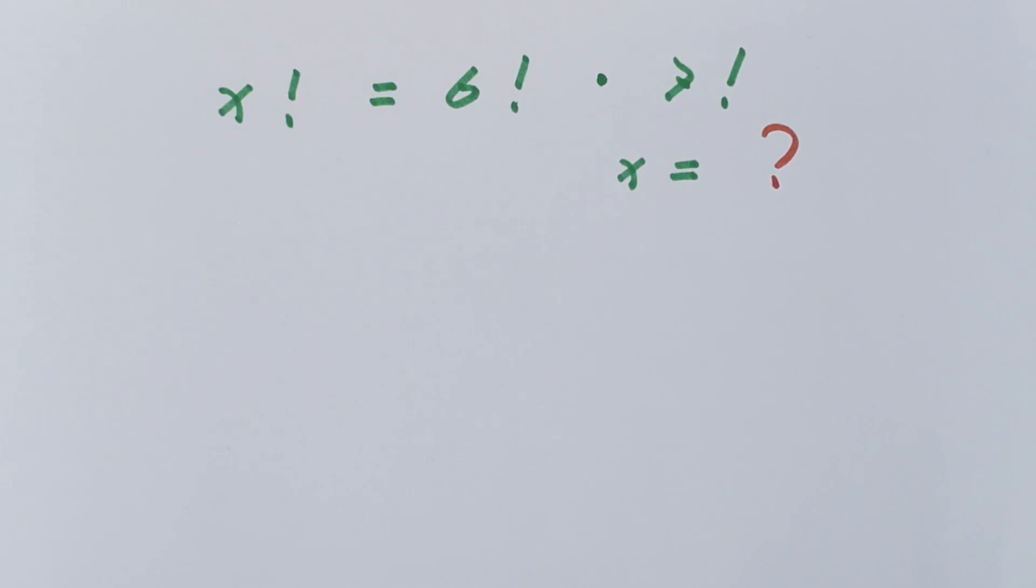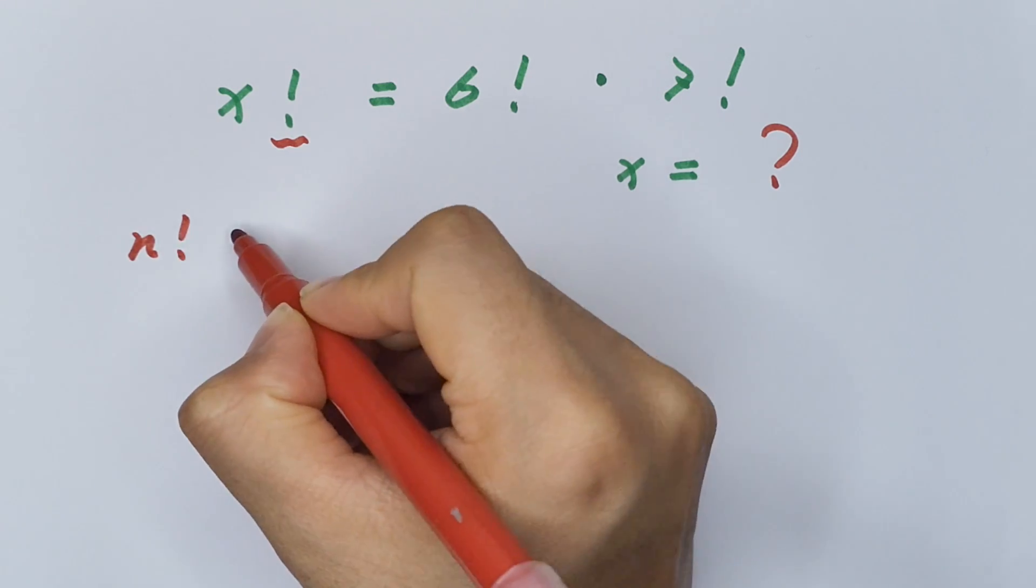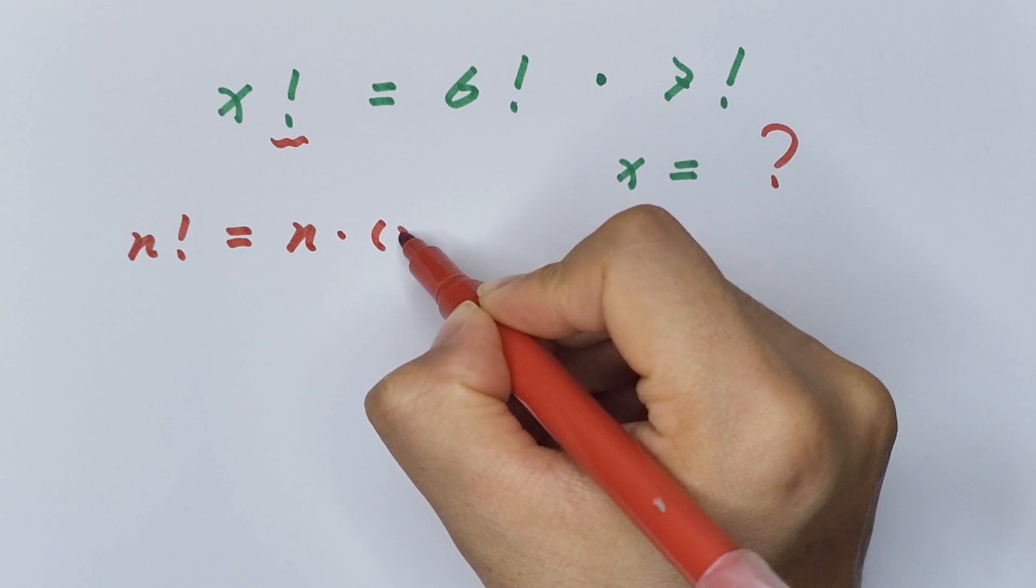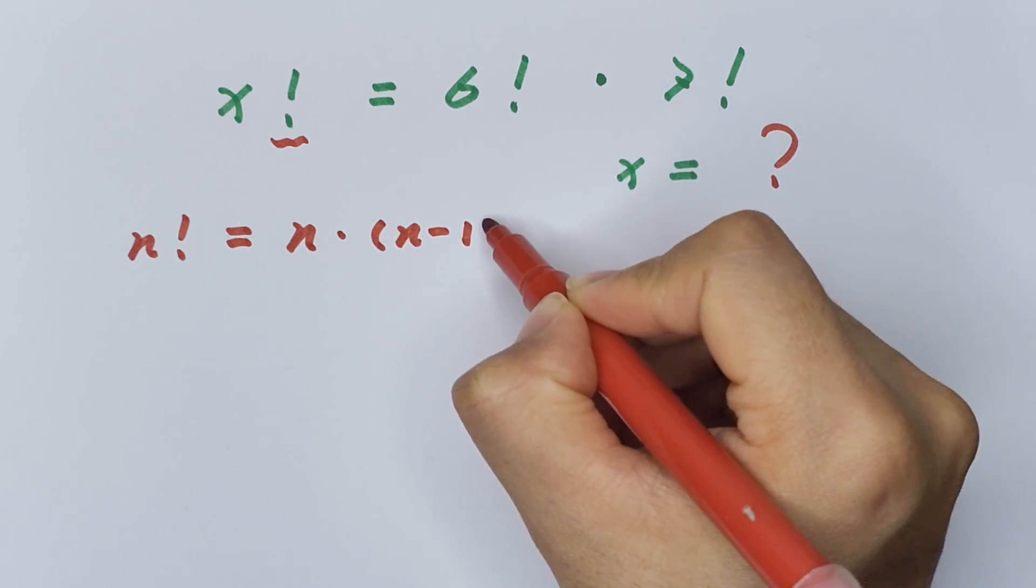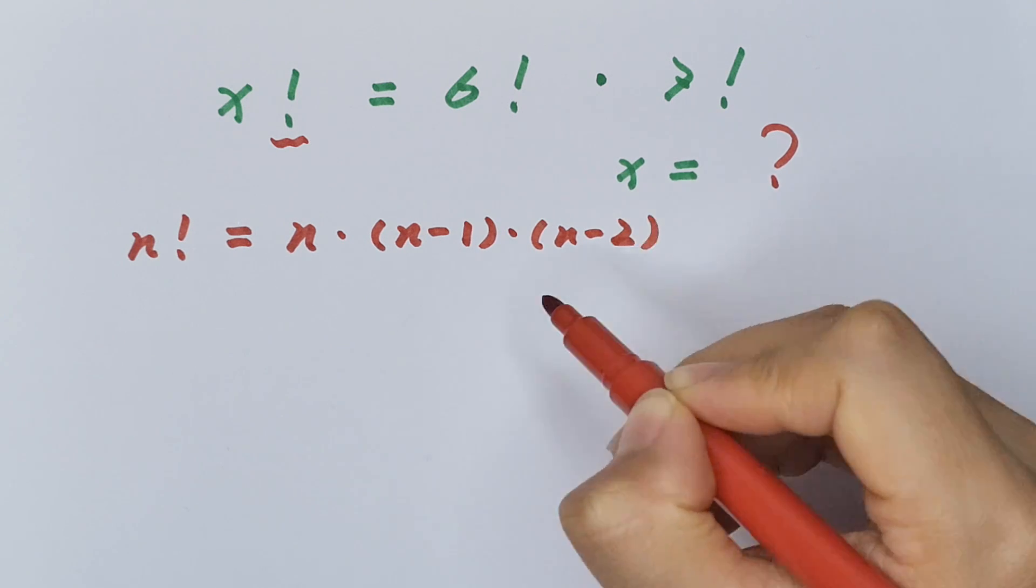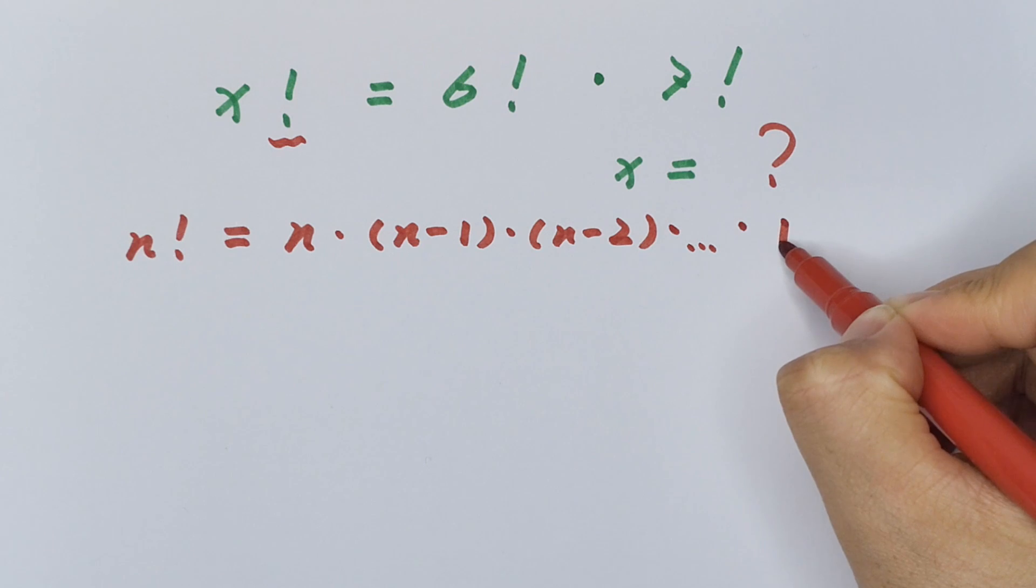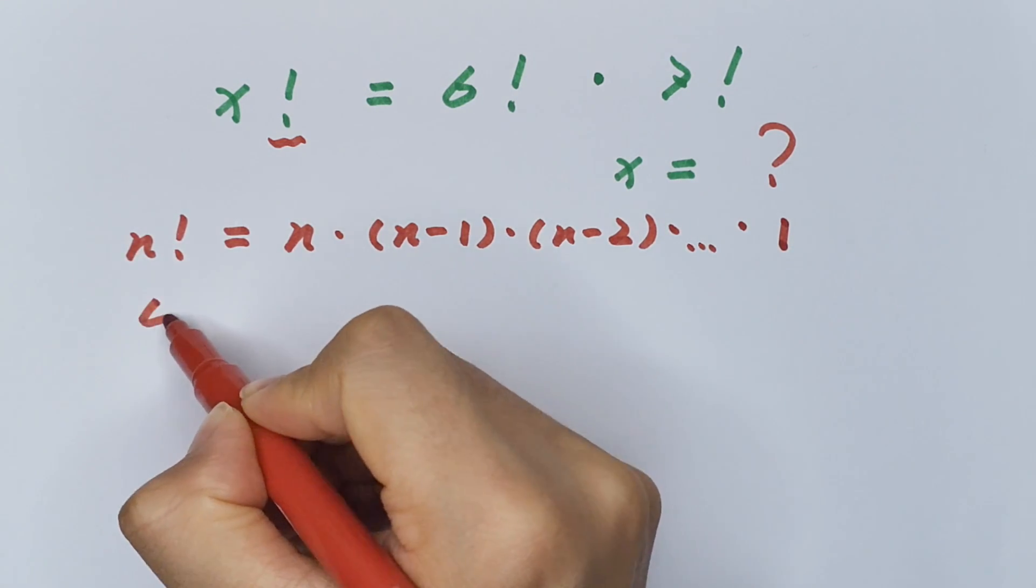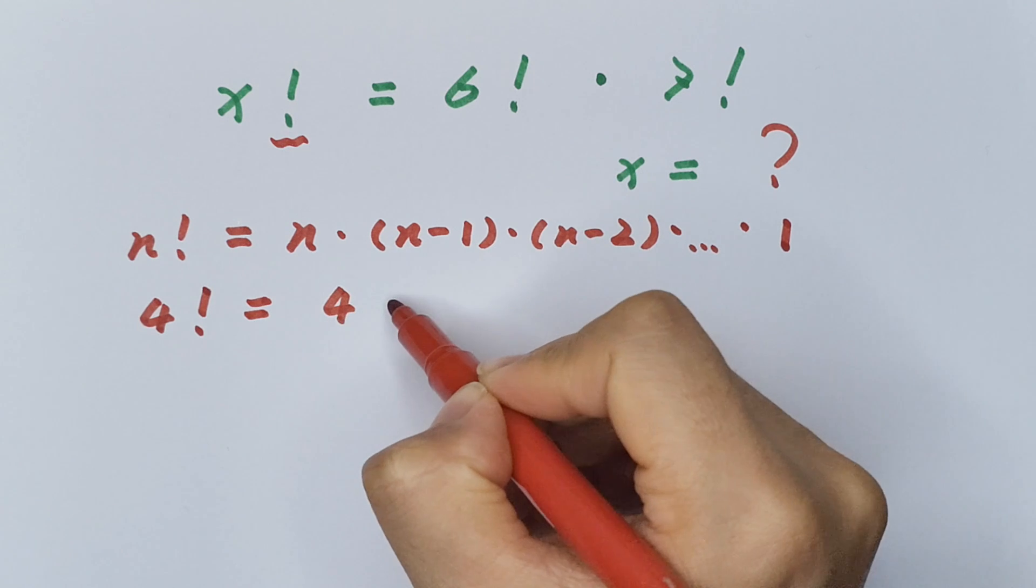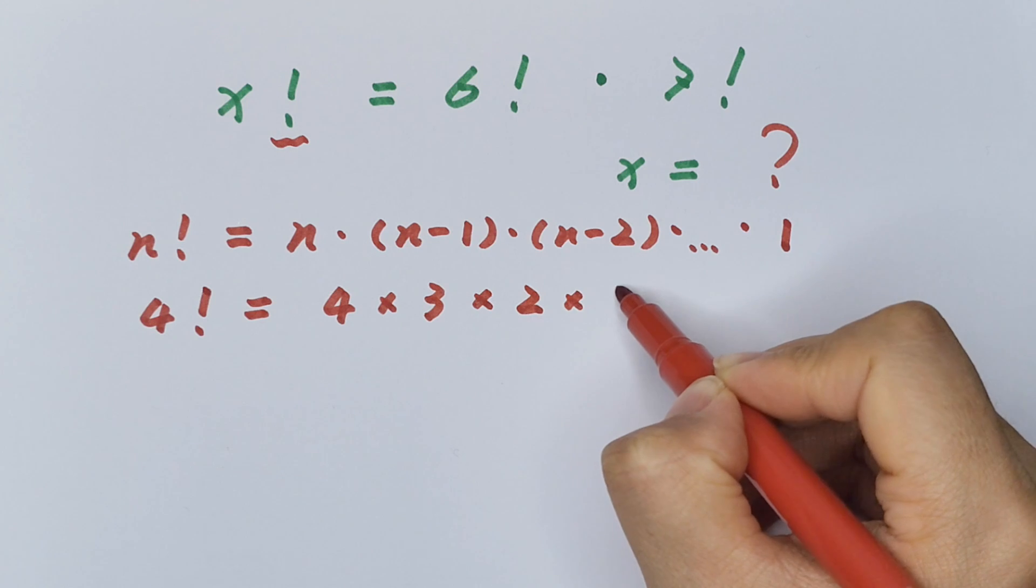First, we'll talk about the factorial. n factorial equals n times (n minus 1) times (n minus 2) and so on, times 1. For example, 4 factorial equals 4 times 3 times 2 times 1.